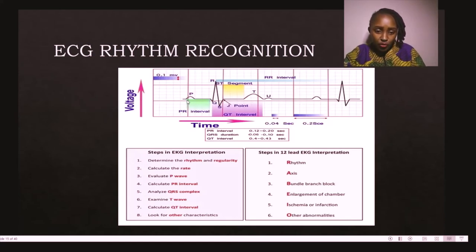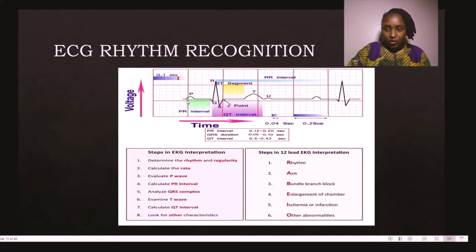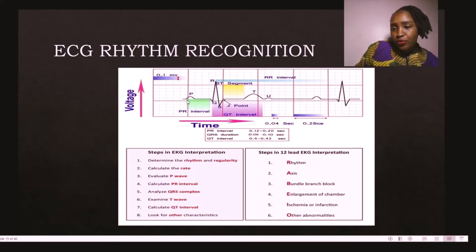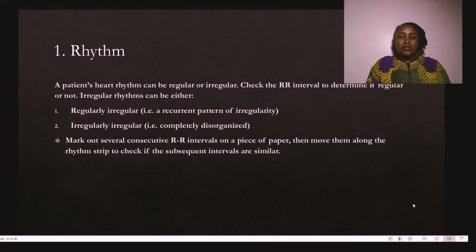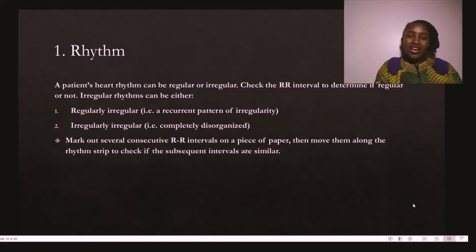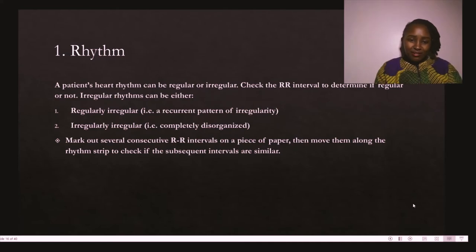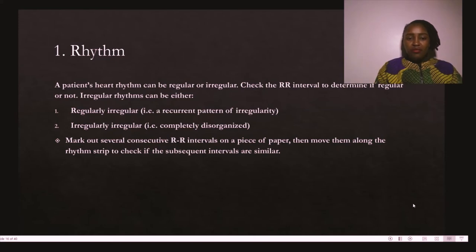I would also like to note about the T wave and the ST segment — if that segment is elevated or depressed, it could indicate myocardial infarction or acute coronary syndrome. However, for day-to-day ECG strip analysis, those first five steps should suffice. The rhythm on the ECG strip can either be regular or irregular, determined by checking the R-R interval. Irregularity can be regularly irregular — a recurrent pattern — or completely disorganized and irregularly irregular. Mark out several consecutive R-R intervals on a piece of paper, then move them along the rhythm strip to check if subsequent intervals are similar.